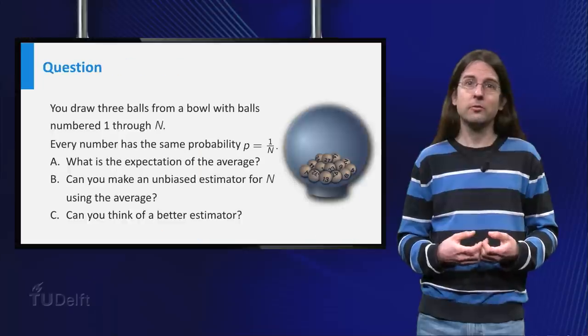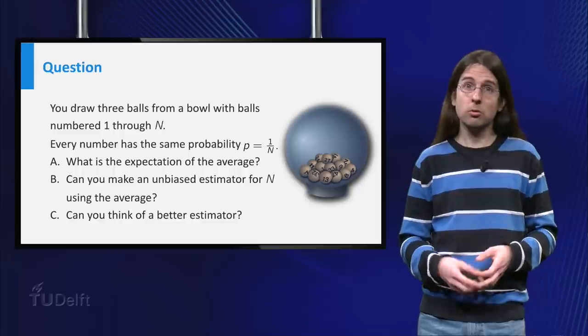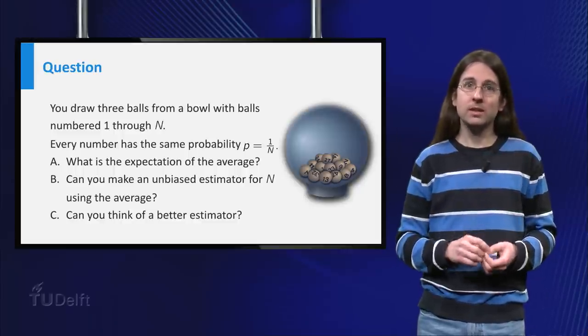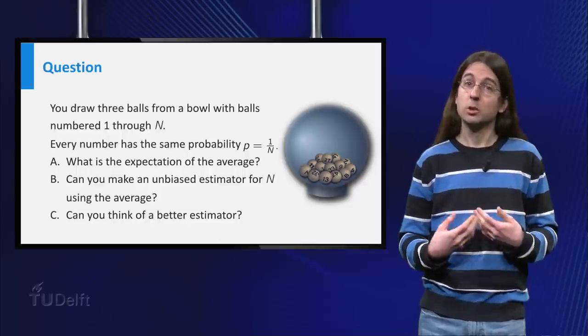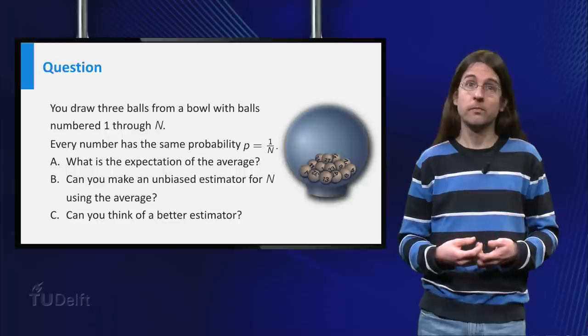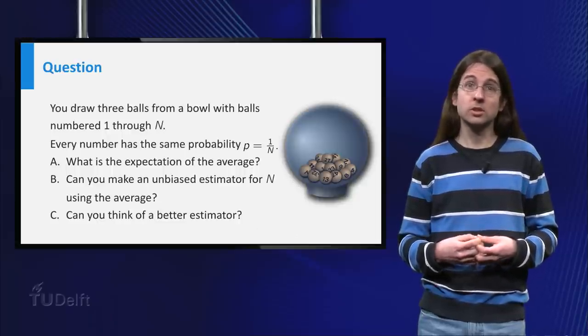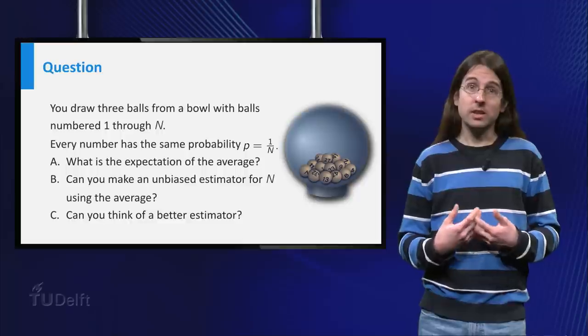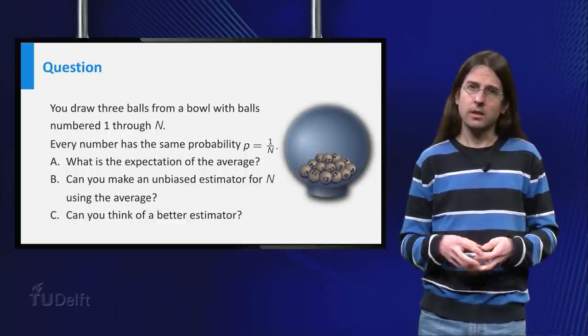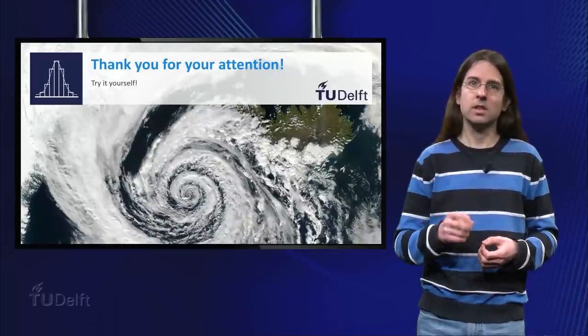Before class I'd like you to think about the following question. Suppose we draw 3 random numbers from the set 1 up to n, where capital N is some unknown parameter. The probabilities for drawing each of these n numbers are equal. You can now calculate the expected value of the average of these three numbers, and you might already see that this expectation depends on the parameter n. Can you turn this average into an unbiased estimator? See you in class.